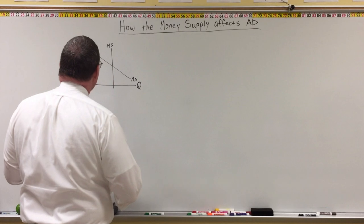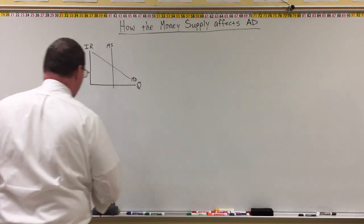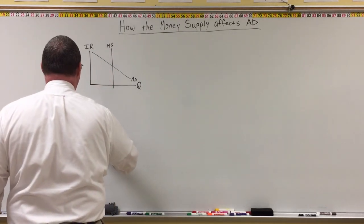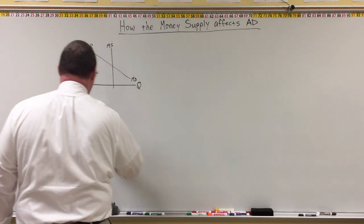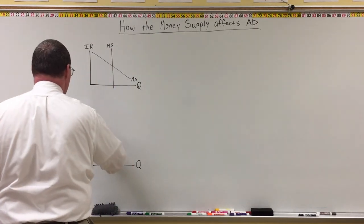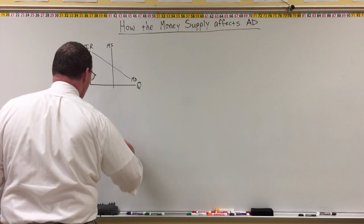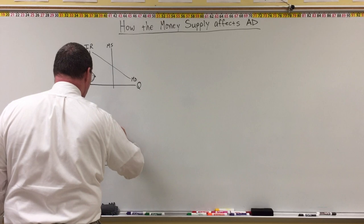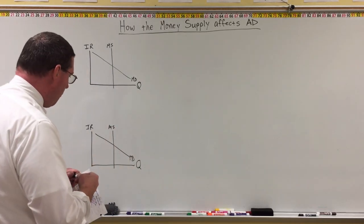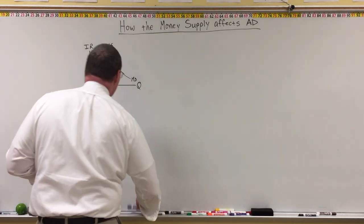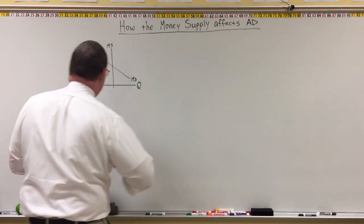I'm going to give you two graphs. We're going to do one for increasing the money supply and one for decreasing the money supply. So we'll do another graph down here — we've got money demand and a vertical money supply curve. Up here, we're going to see what happens when the money supply increases.